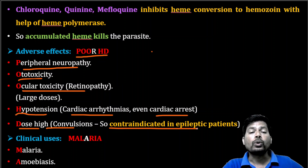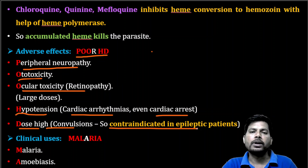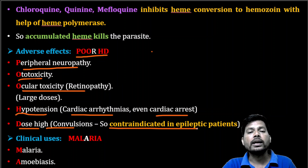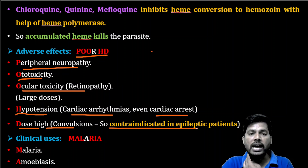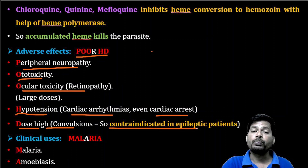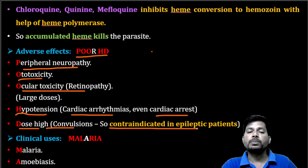Chloroquine is specifically contraindicated in epileptic patients. If a person has epilepsy along with malaria, chloroquine is not preferred because it may increase the severity of the epilepsy. Therefore, do not use the anti-malarial drug chloroquine if the patient is suffering from both epilepsy and malaria.